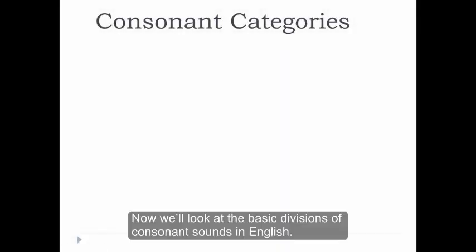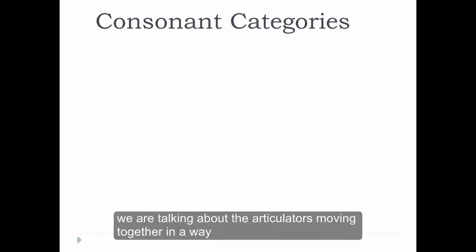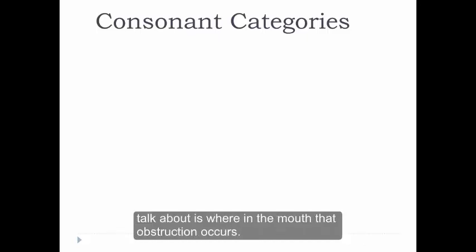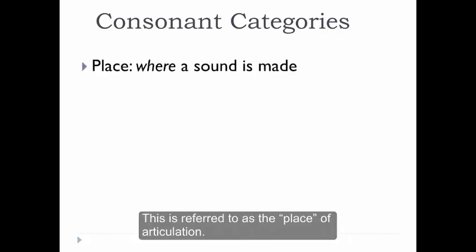Now we'll look at the basic divisions of consonant sounds in English. When we're talking about consonants, we're talking about the articulators moving together in a way that obstructs the movement of air from the lungs. When we describe consonants, one of the most important factors to talk about is where in the mouth that obstruction occurs. This is referred to as the place of articulation.